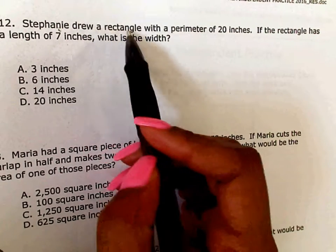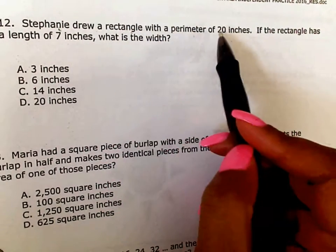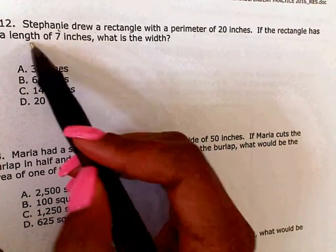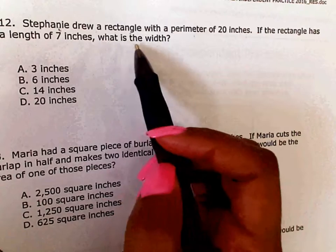Stephanie drew a rectangle with a perimeter of 20 inches. If the rectangle has a length of 7 inches, what is the width?